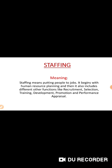Staffing also includes different functions like recruitment, selection, training, development, promotion, and performance appraisal. Recruitment is nothing but making the requirement of employees in the organization — recruitment means informing about job opportunities in the organization. Selection means selecting a good, suitable person in the organization — a suitable person for a particular location or particular place.